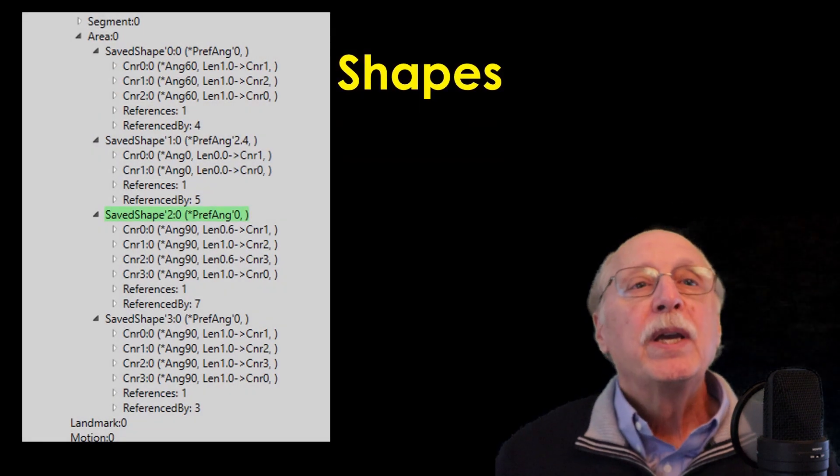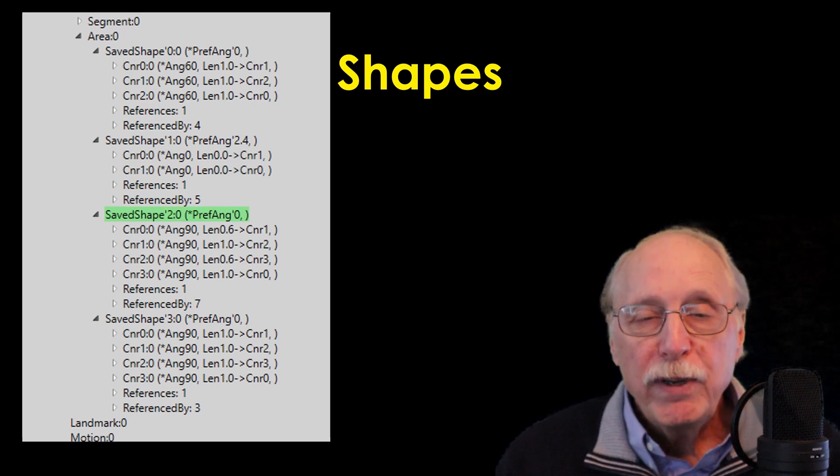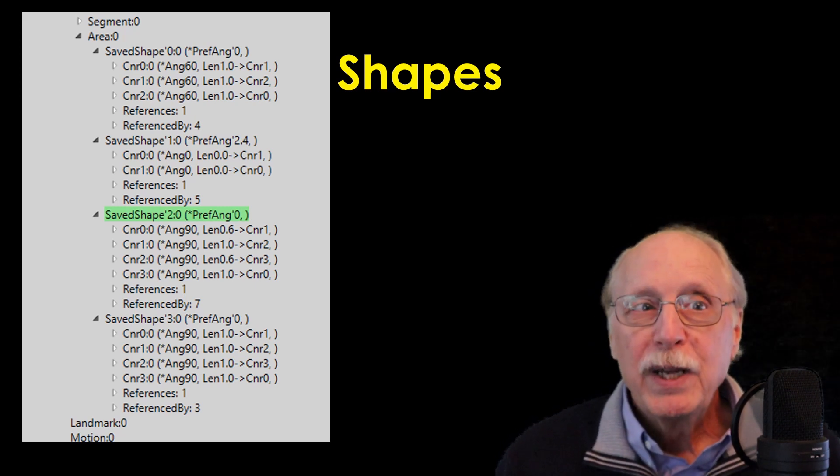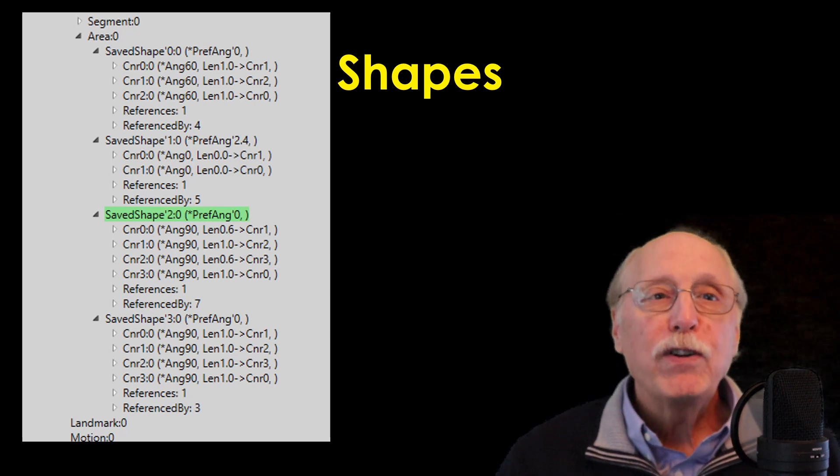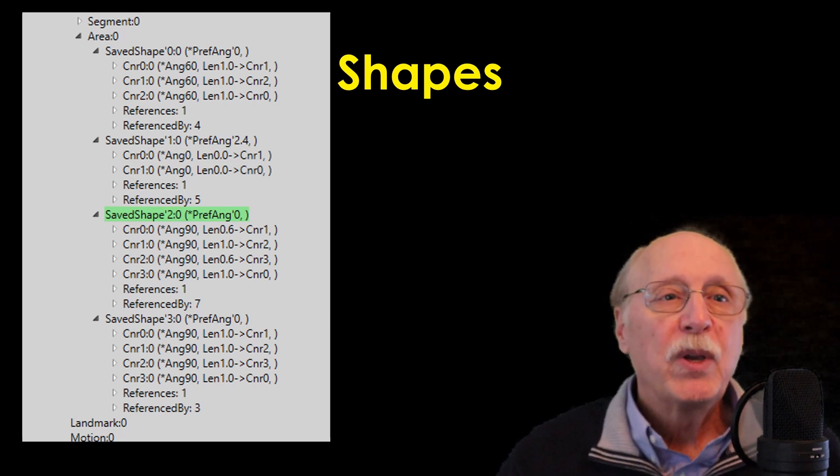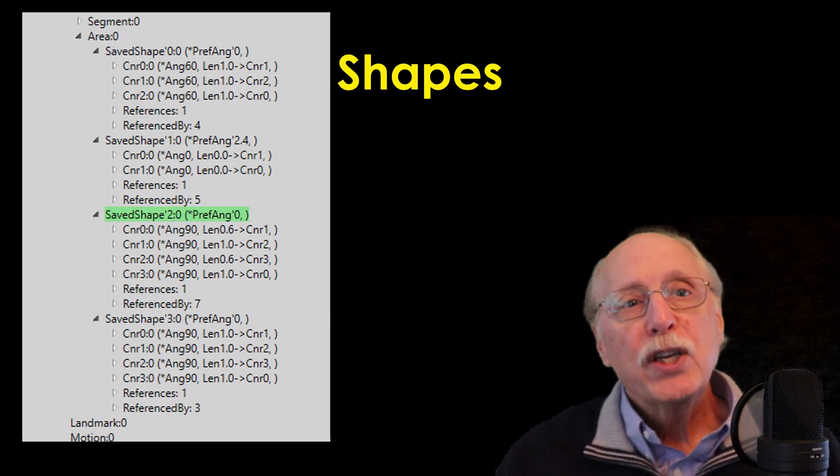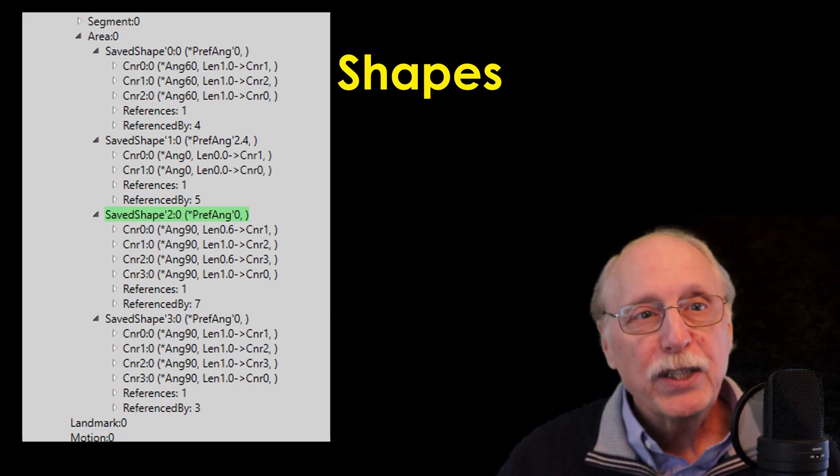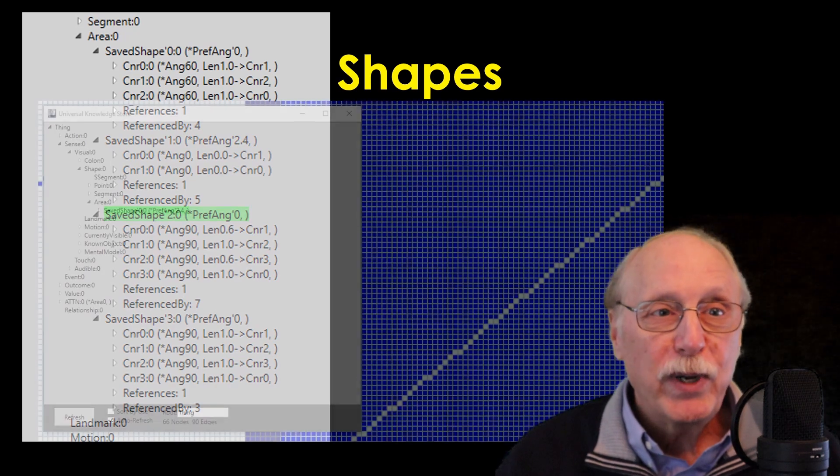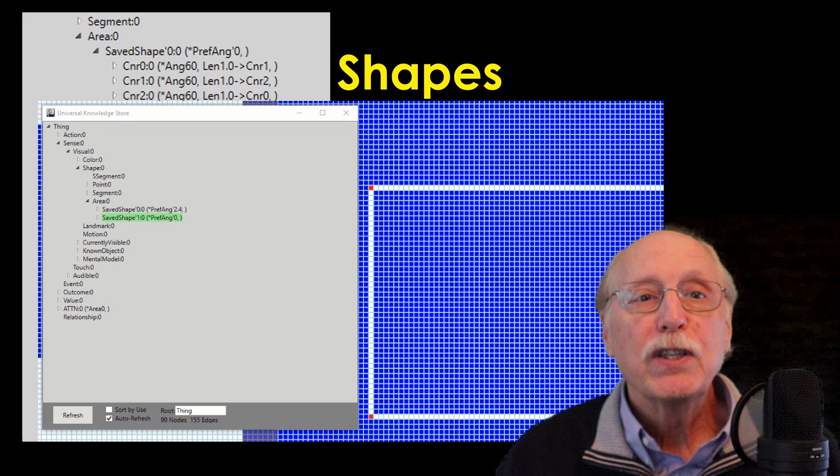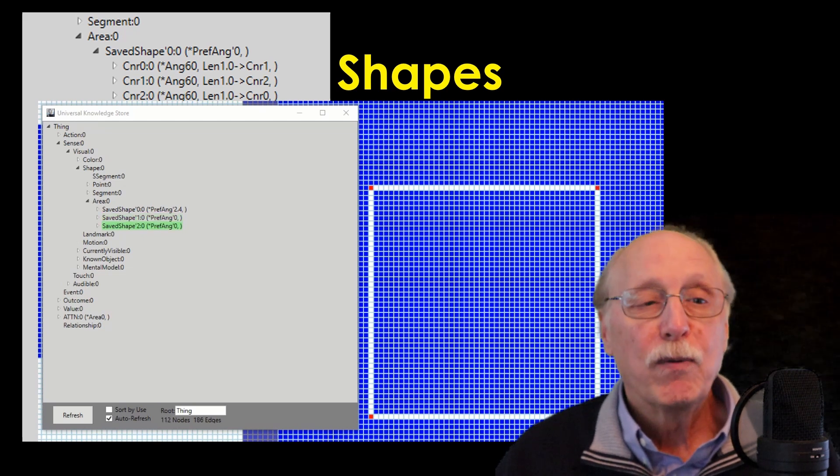Shapes: Areas in the previous step are in the coordinate system of the visual input. This means that all visual areas will change if you get closer to an object or just move your eyes. Within the UKS, shapes consist of corners with angle properties and the ratios of lengths between them. That way, a shape can be recognized regardless of its size, position, or rotation.